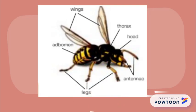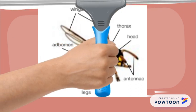Here you can see an example of an insect, where you can see the head, the thorax, the abdomen, and then the wings, the legs and the antennae.